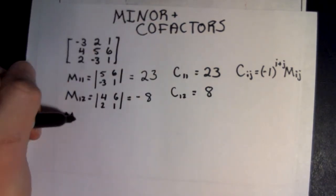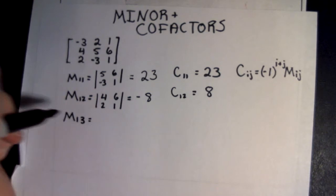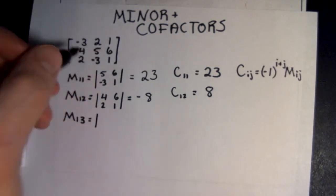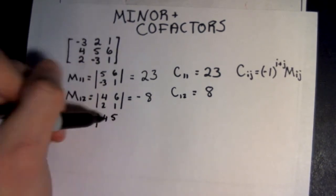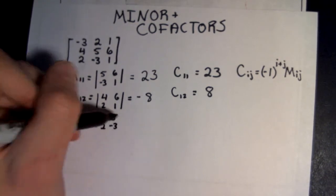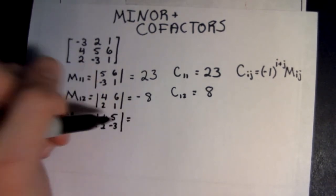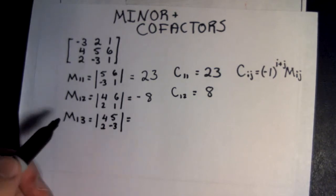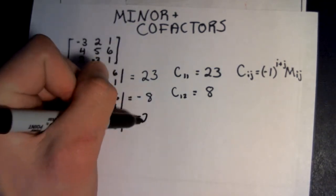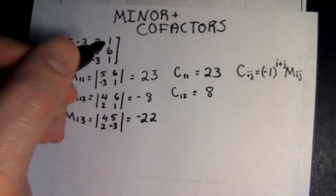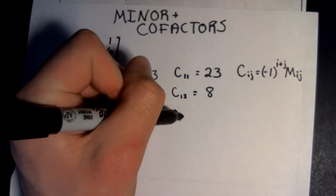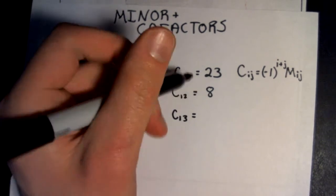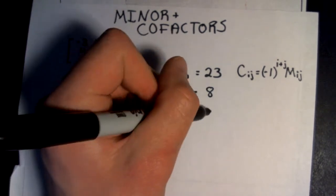Now we have M13, which is equal to the determinant of 4, 5, 2, negative 3. So we have negative 12 minus 10, which is going to be negative 22. And the cofactor of C13 will not change because you have an even number — 1 plus 3 is 4 — so it's just going to be negative 22.